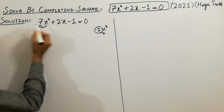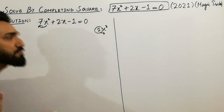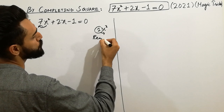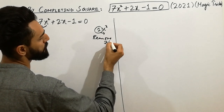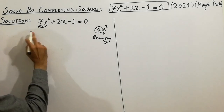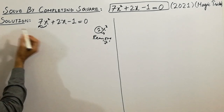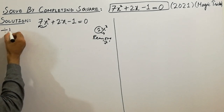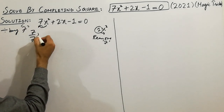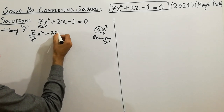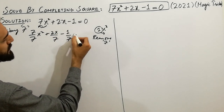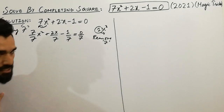Here there is a coefficient of 7, so you have to remove it. Simply, you have to divide by 7 on both sides. Dividing by 7: 7 over 7 x squared plus 2x over 7 minus 1 divided by 7 is equal to 0 divided by 7.